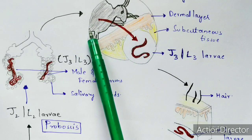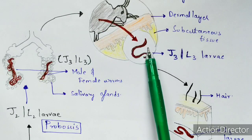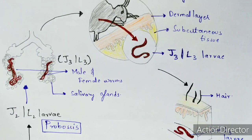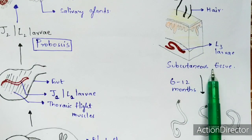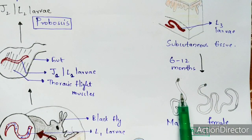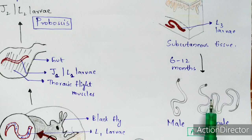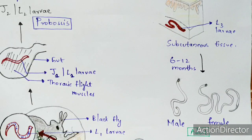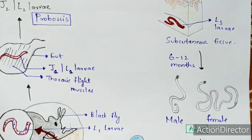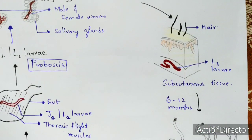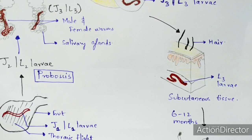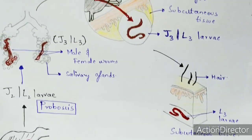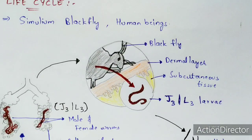When the black fly bites a human again, the dermal layer forms pores, and the larvae present in the fly enter the subcutaneous tissue, restarting the cycle. The larvae mature into adult worms, mating occurs, eggs are formed and hatched, and the resulting L1 larvae are again picked up by a black fly, repeating the cycle from J1 to J2 to J3.